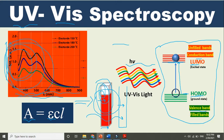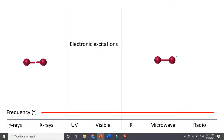HOMO and LUMO can also be called valence band and conduction band. When we talk about a crystal or solid object — an atom in a periodic structure — we mostly use valence band and conduction band. When there are weak intermolecular forces, we use HOMO and LUMO. The valence band and HOMO are filled, while the conduction band and LUMO are empty.